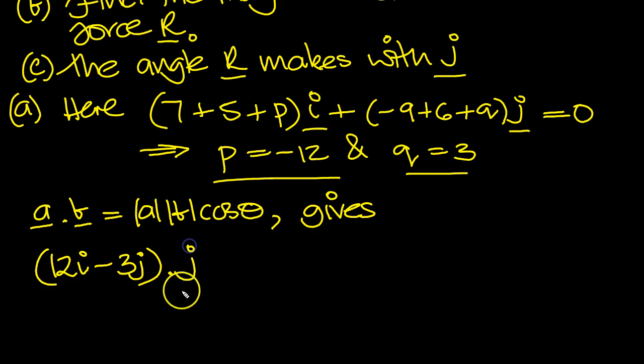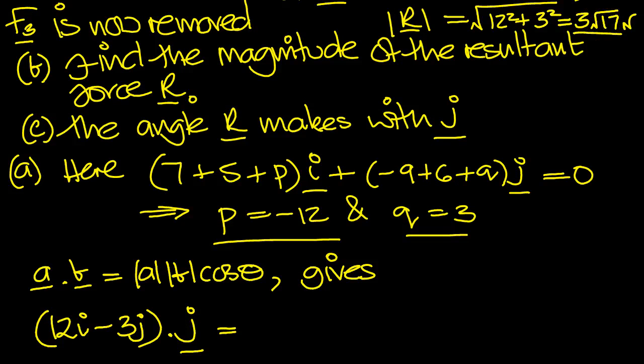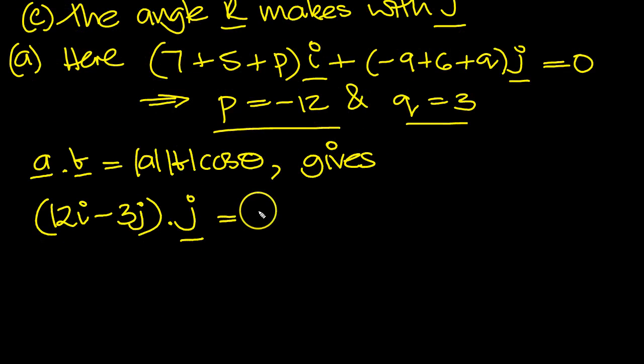12i minus 3j is the R. Dot with J is equal to the modulus of this, which was 3 root 17, times 1, because the modulus of J is 1, cosine of the angle between. So that tells us then,